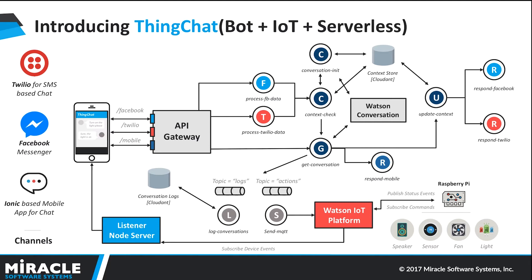To ensure a seamless user experience, the chatbot backend delegates two tasks to asynchronous workers: logging conversations to a database and sending MQTT messages. We publish two messages to two Kafka topics — logs and actions — running on the Bluemix Message Hub service. This triggers two OpenWhisk services: one logs conversations to Cloudant, and the other sends an MQTT message to the Raspberry Pi via Watson IoT Platform. The Raspberry Pi subscribes to commands, executes them, publishes its state back to a listener, which then routes the response back to the originating channel.